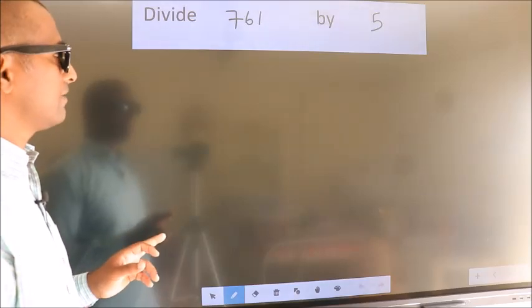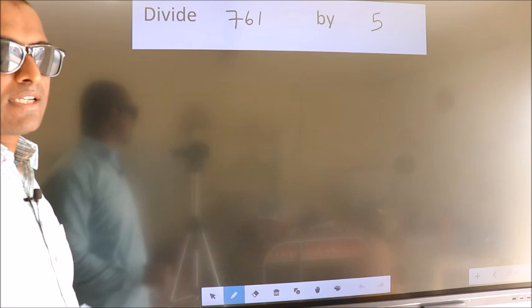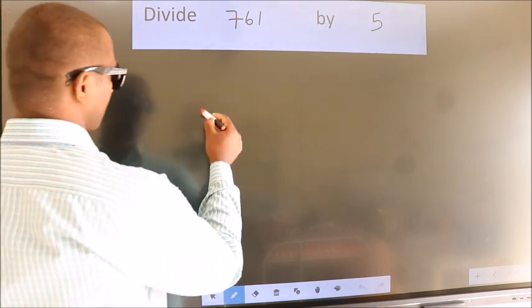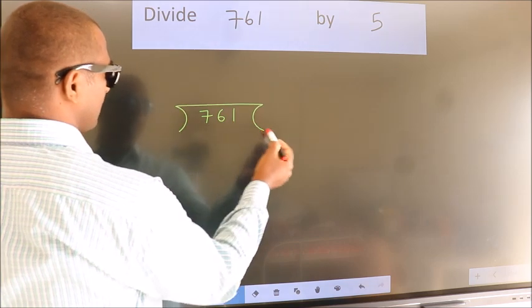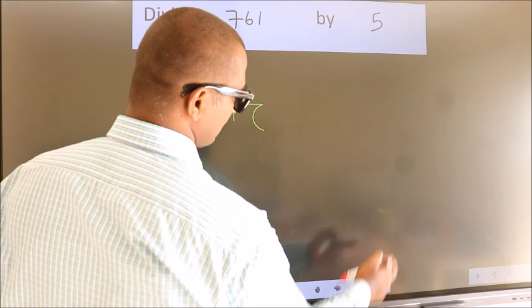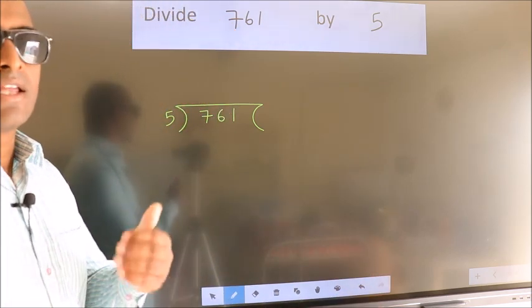Divide 761 by 5. To do this division, we should frame it in this way: 761 here, 5 here. This is your step one. Next,